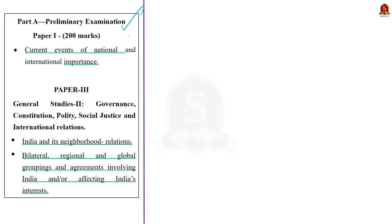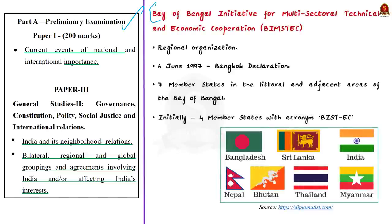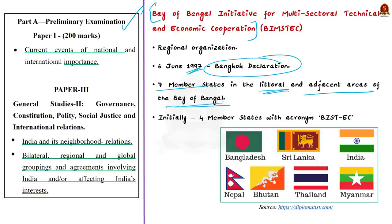The author discusses the significance of BIMSTEC, especially the Bay of Bengal and the challenges faced by the region, and also suggests solutions to address those issues. BIMSTEC stands for the Bay of Bengal Initiative for Multisectoral Technical and Economic Cooperation. It is a regional organization that came into being in 1997 through the Bangkok Declaration. It comprises seven member states lying in the littoral and adjacent areas of the Bay of Bengal — five from South Asia: Bangladesh, Bhutan, India, Nepal, and Sri Lanka; and two from Southeast Asia: Myanmar and Thailand.